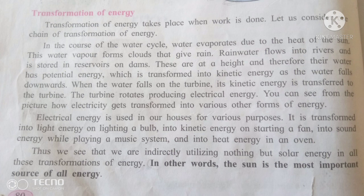Electrical energy is used in different ways, but the formation of electrical energy starts with the sun. Directly or indirectly, energy is transferred from one form to another form. In other words, the sun is the most important source of all energy — firstly, the sun creates the energy and provides it in different ways.